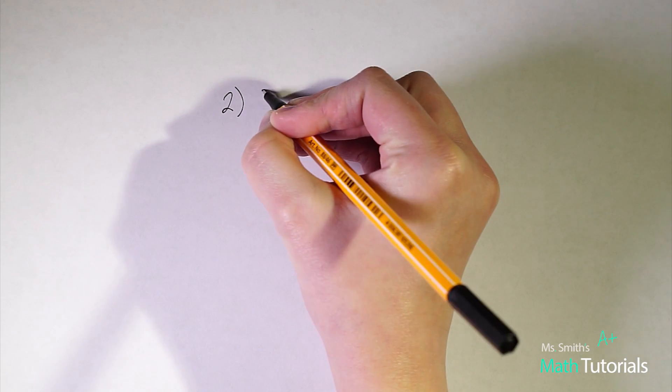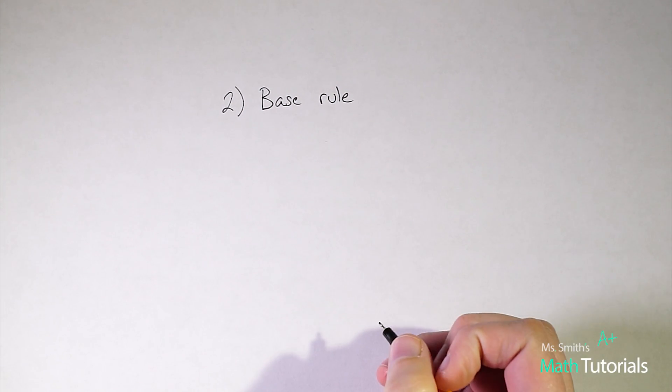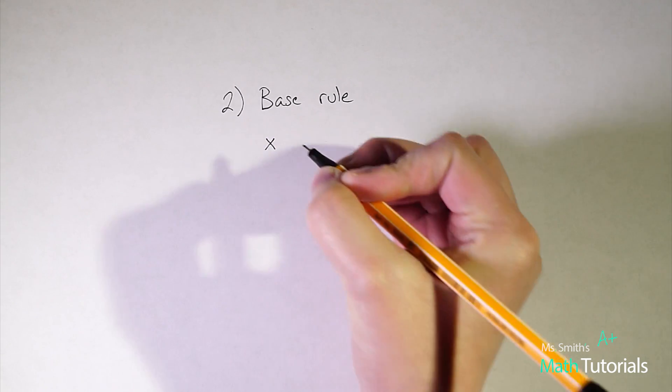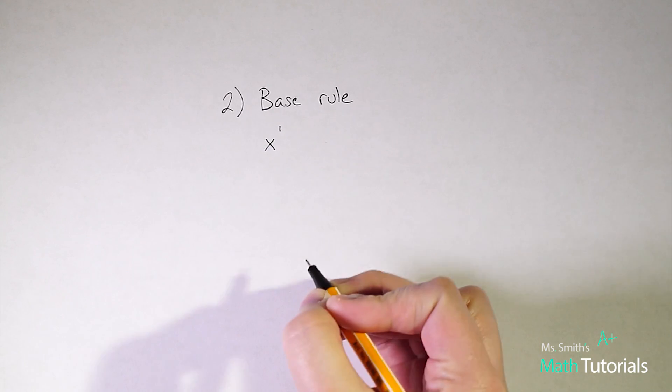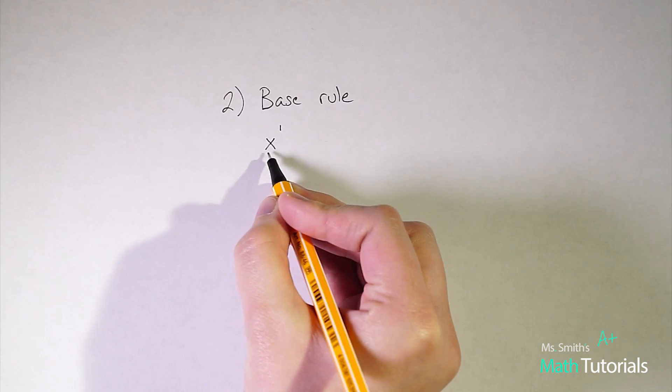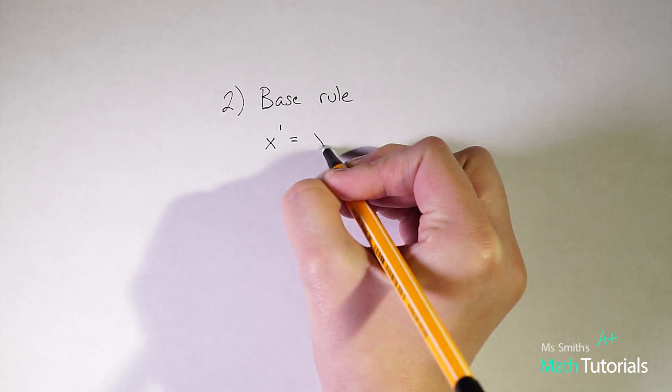Our second rule within our laws of exponents is going to be what I'm going to call the base rule. I've seen different names online for this rule, but I just like to call it the base rule. And it basically states that any number or variable brought to the power of one is that base. So in this case, x to the power of one is x.